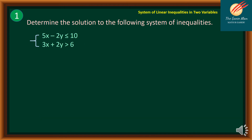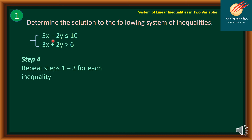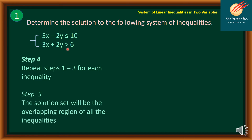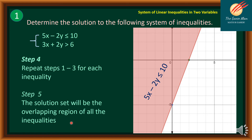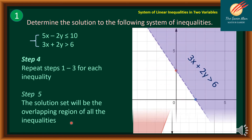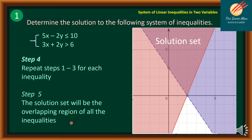For steps 4 and 5, we have completed both inequalities: 5x minus 2y ≤ 10 and 3x + 2y > 6. The solution set is the overlapping region of all the inequalities. Recalling both shaded regions, this overlapping area is the solution set for the system of inequalities.